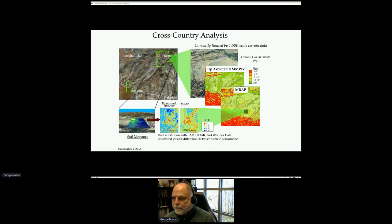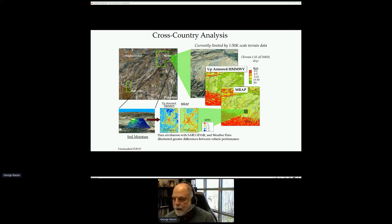Here's an example: Afghanistan — Kabul soil moisture maps were used to generate speed maps as a final product, comparing Humvee and MRAP performance in the area. You can see a little more blue on the Humvee map, showing it was operating slightly better in that region than the MRAP — which is what you'd expect. In this case we used LiDAR to generate elevations at higher resolution compared to SRTM.